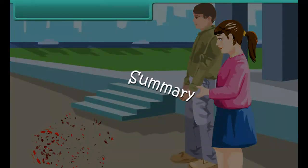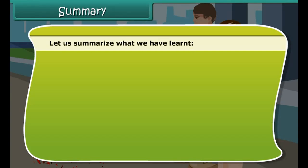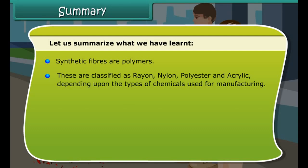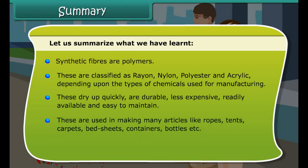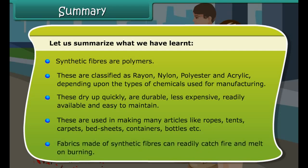Let us summarize what we have learned. Synthetic fibers are polymers, classified as rayon, nylon, polyester, and acrylic depending upon the types of chemicals used for manufacturing. These dry up quickly, are durable, less expensive, readily available and easy to maintain. They are used in making many articles like ropes, tents, carpets, bedsheets, containers, bottles, etc. Fabrics made of synthetic fibers can readily catch fire and melt on burning.